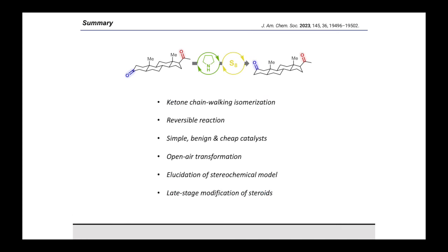In summary, we developed a ketone chainwalking isomerization reaction that operates under mild conditions, is reversible and uses cheap and benign catalysts. We elucidated a stereochemical model for understanding the thermodynamic and kinetic selectivity of our process, enabling us to edit a variety of synthetically relevant compounds, including steroids, at a late stage.